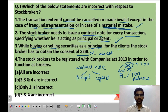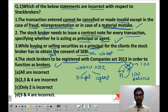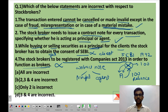Statement 4: stock brokers need to be registered with Companies Act 2013 in order to function as brokers. This statement is also incorrect because the broker needs to register with SEBI under the SEBI Act 1992, not the Companies Act. So statements 1 and 2 are correct, and 3 and 4 are incorrect. The correct option is D — 3 and 4 are incorrect.